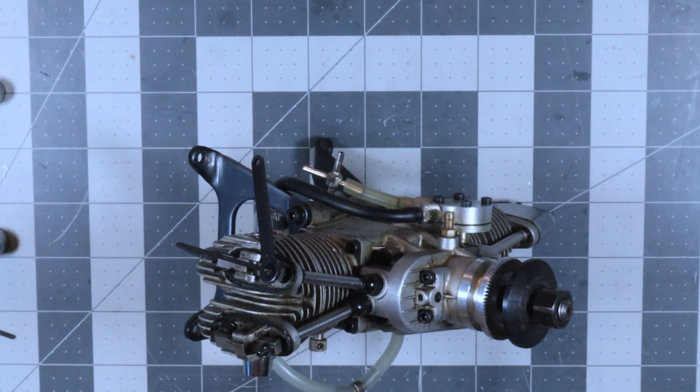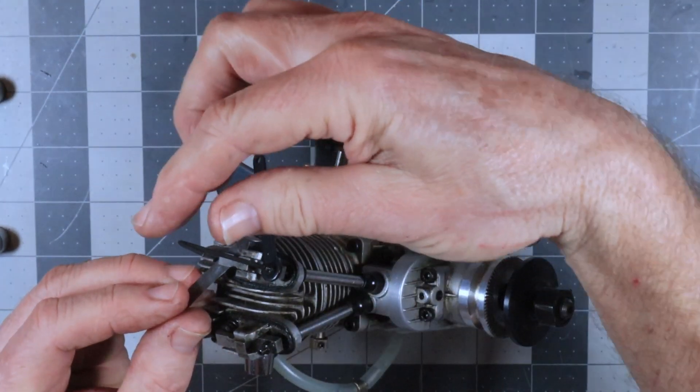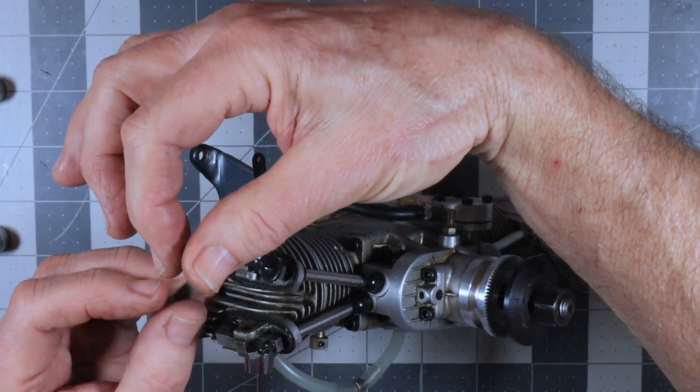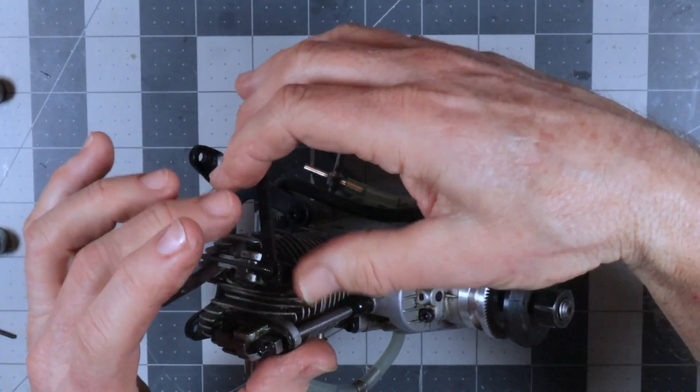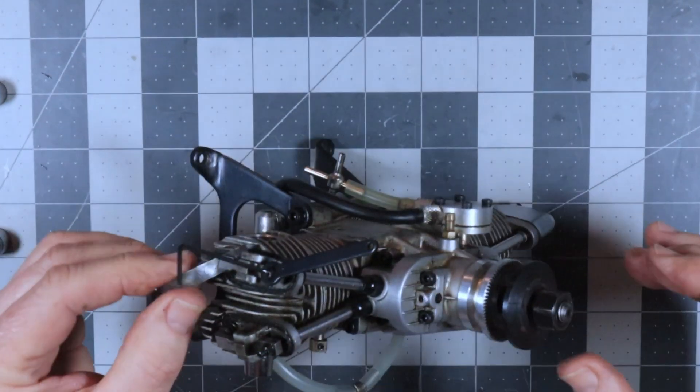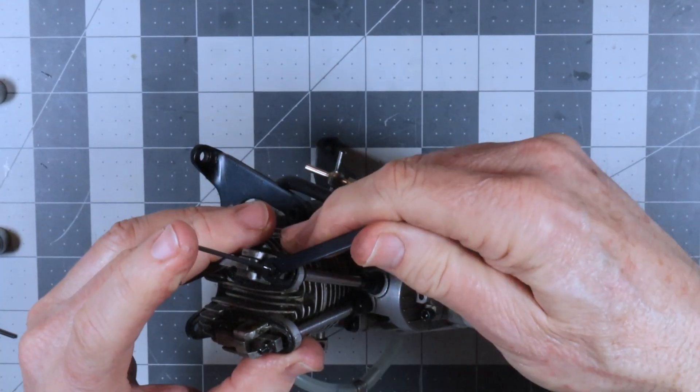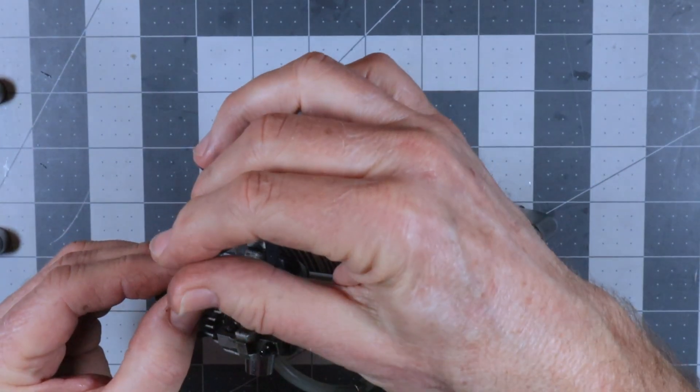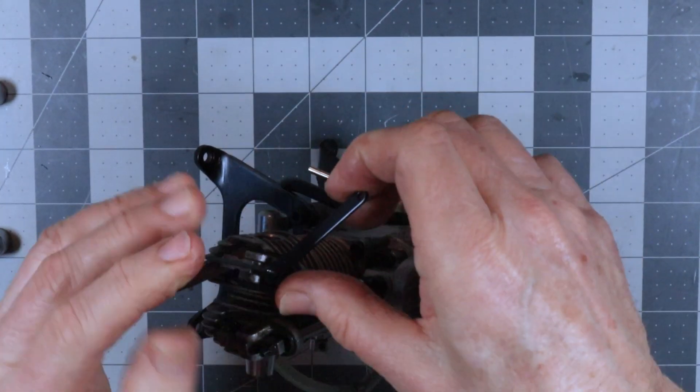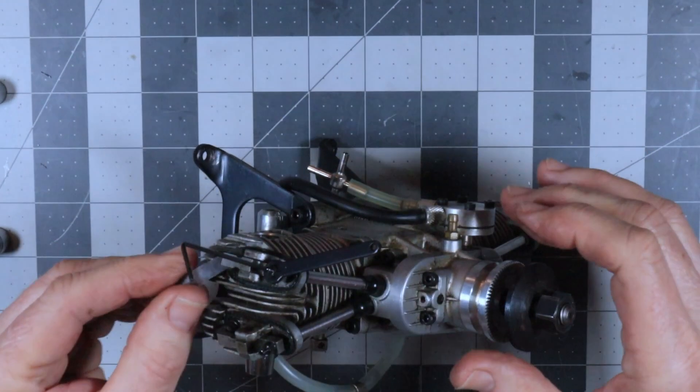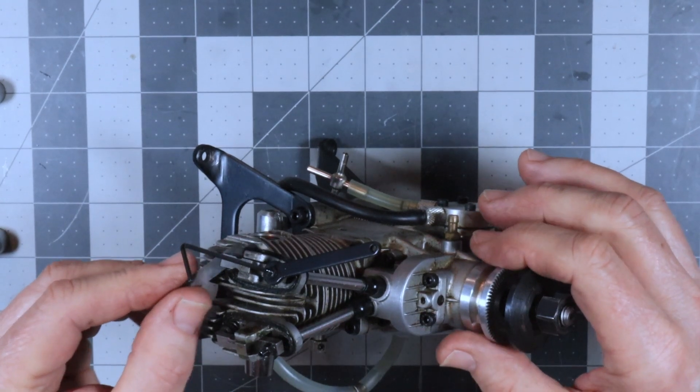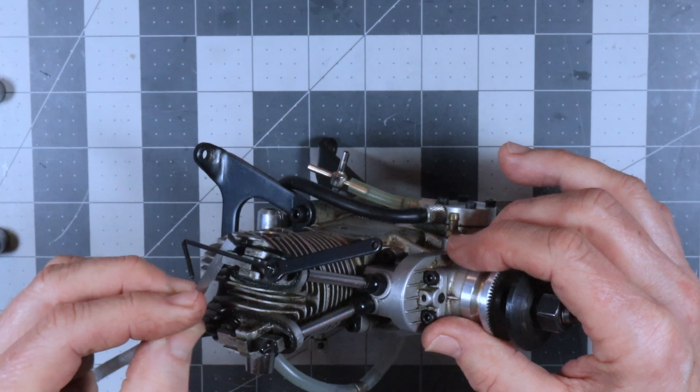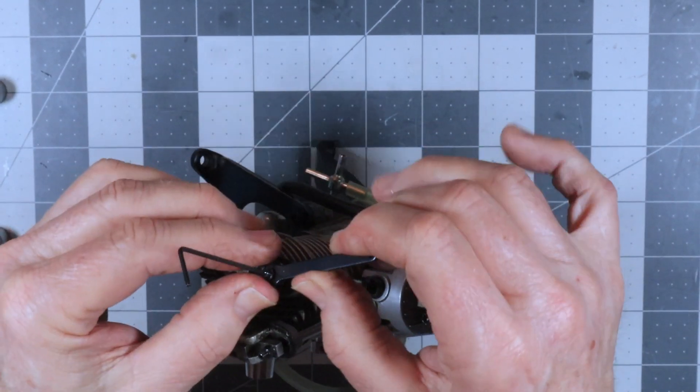So what I'm going to do here is I'm going to put my go-gauge in here and I'm just going to turn this until I just feel it start to nip that. And then I'm going to tighten that up. And it's nipping it pretty hard, so that's too much. Hold it, tighten that, it's just nipping it. This won't go. So right now that's set properly.